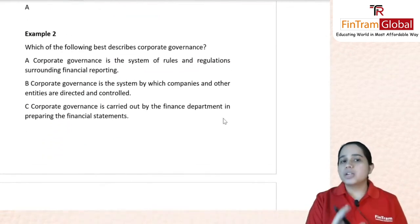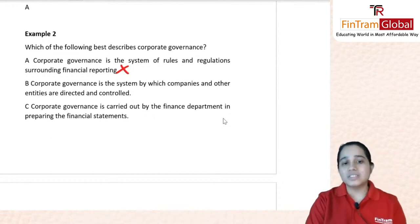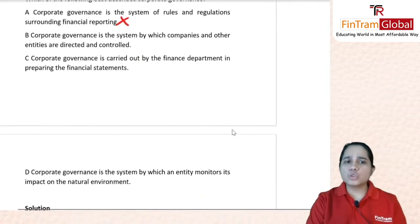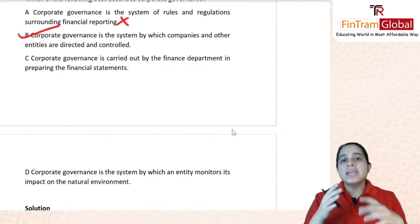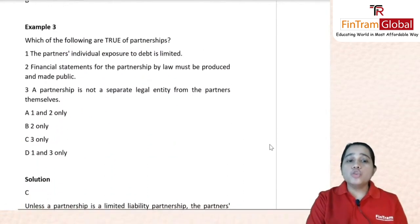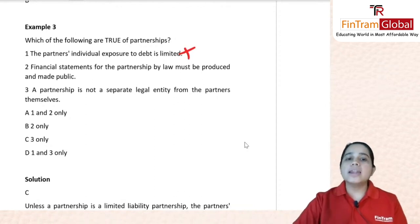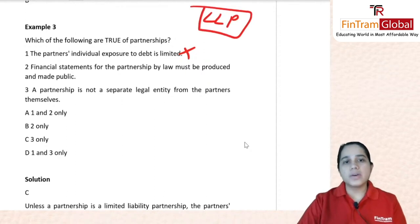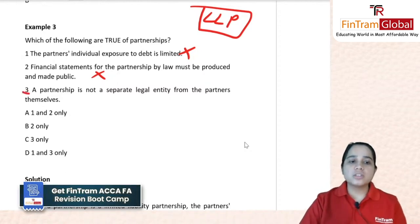Example 2: which of the following best describes corporate governance? Option A: a system of rules and regulations surrounding financial reporting — no. Option B: the system by which companies and other entities are directed and controlled — yes, we studied that. Option C: it is carried out by a finance department. Option D: a system by which an entity will monitor its impact on the natural environment. The correct answer is B — it is the system by which entities are directed and controlled.